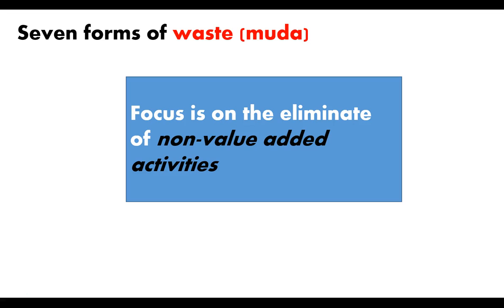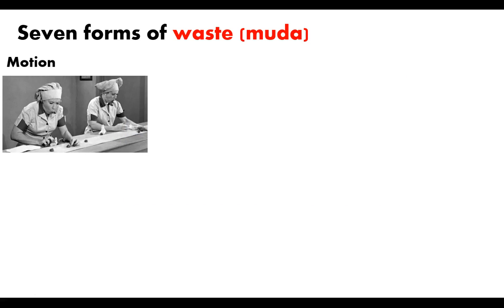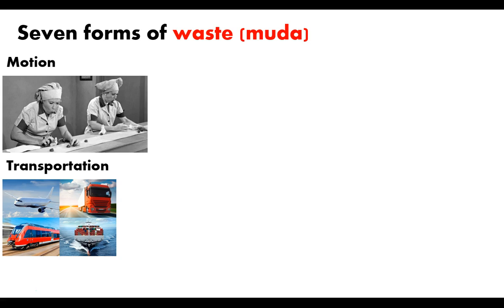In looking at these non-value-added activities, Taiichi Ohno came up with the idea of Muda — he categorized waste into seven different forms. One was motion — unnecessary motion. One is transportation. If you live in Ohio and you're getting bananas from Jamaica, there is very little added to the value when you send those bananas over on a boat, plane, or truck to get them to Ohio. The banana stays the same — so that's a form of waste. It was something you had to do, but it was still a form of waste, and if you could eliminate it from the process, that would add value to the customer and take away a cost from the owner.